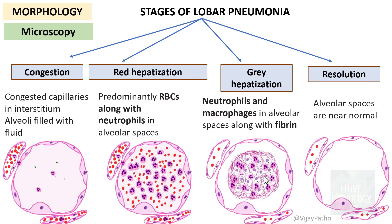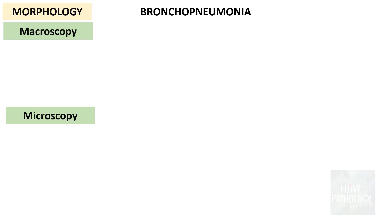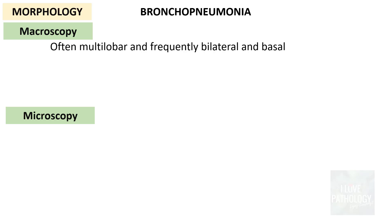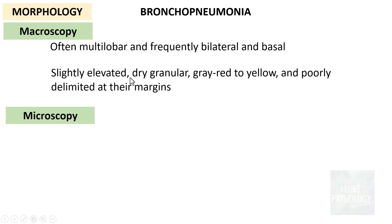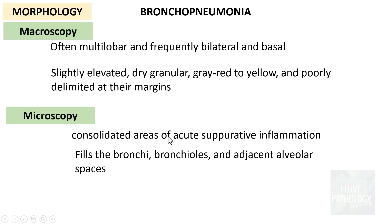In the resolution stage, alveolar spaces are near normal because macrophages have ingested the organisms, neutrophils are dead, and sputum is expelled by expectoration. Note that such classical cases are rarely seen today because patients are treated early. Microscopically, bronchopneumonia is often multi-lobar, frequently bilateral, and basal in location. Lesions are slightly elevated, dry, granular, gray-red to yellow, and poorly delineated. The consolidated areas show suppurative inflammation filling bronchi, bronchioles, and adjacent alveolar spaces, while the intervening lung parenchyma remains normal and aerated.